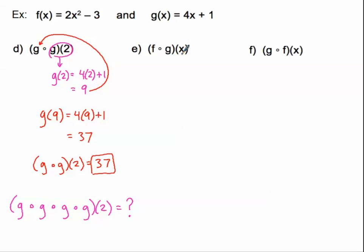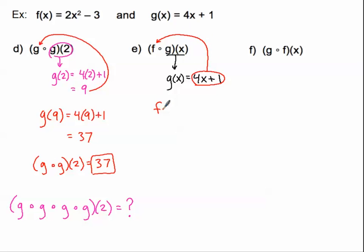What if we just have our variable — f of g of x? Now we'll have an expression with x's in it, but it's the same exact idea. The first thing I need is g of x, which is given: g of x is 4x plus 1. I'm not plugging a number in, so I get the binomial expression 4x plus 1. Now I'm going to plug that entire binomial into the f function, so this becomes f of 4x plus 1. The entire binomial takes the place of x, giving us 2 times the quantity 4x plus 1, squared, minus 3.